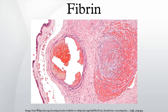Factor 13 completes the cross-linking of fibrin so that it hardens and contracts. The cross-linked fibrin forms a mesh overlying the platelet plug that completes the clot.